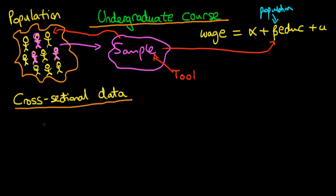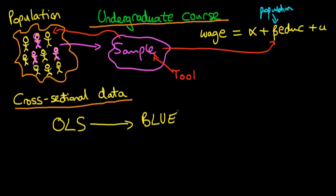When we first start talking about estimation techniques, we'll begin with cross-sectional data — that might be the level of wages and the level of education for a set of individuals at one point in time. Under a certain set of criteria, a tool which we call ordinary least squares happens to be quite a good tool to use on our sample. Under those criteria, ordinary least squares is what we call BLUE — the best linear unbiased estimator possible. Don't worry if you don't understand what that means; we're going to cover that in due course.